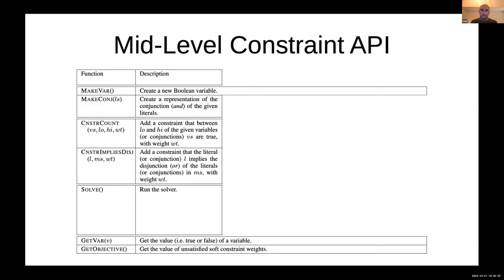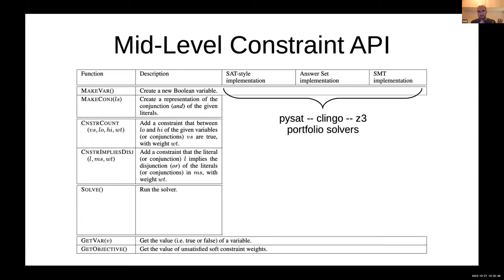From this mid-level API, it maps down to a variety of different low-level solvers implemented within the system, including SAT-style solvers, Answerset solvers, and SMT solvers. In this work, the SAT-style solvers all came from the PySat library. The Answerset implementation was Clingo-based solvers, and the SMT solver was Z3.